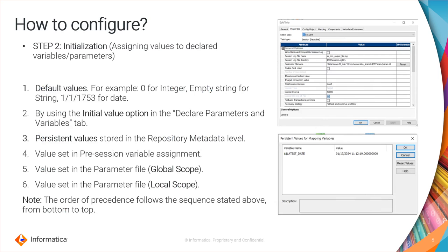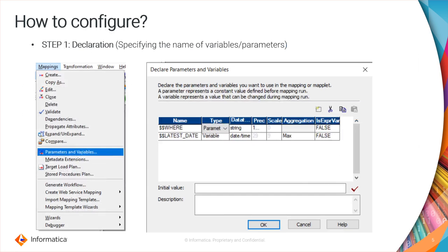For initialization — how to provide values for the created variable or parameter — there are several approaches. If you don't set the value in any of the options, then it will pick the default value based on the data type. For example, 0 for integer, empty string for string, and 1st January 1753 for a date. Or you can use the initial value option, which you can configure in the same tab where you declared the parameter or variable.